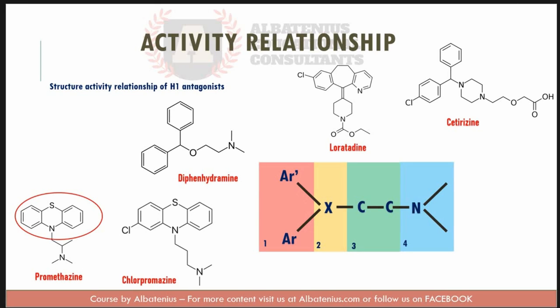Now let's discuss the H1 antagonists, which are the antihistamines and anticholinergic drugs. We have Group 1 in red — those are the Ar groups. Group 2 is in yellow, which is the nature of X. Group 3 is in green — the carbon chain. And Group 4 in blue — this is the terminal nitrogen.